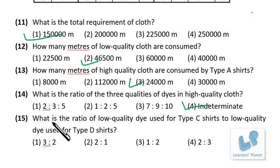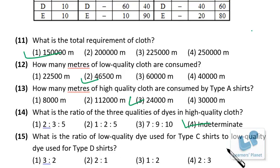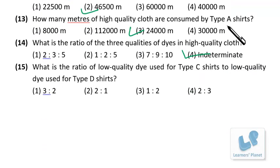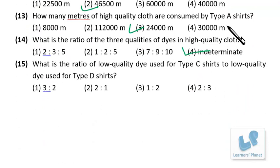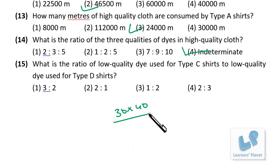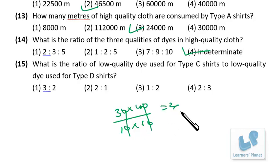For the ratio of low quality dye used in Type C shirts to low quality dye used in Type D shirts: Type C has 30,000 shirts with 40% low quality dye, and Type D has 10,000 shirts with 60% low quality dye. So the ratio is (30,000 × 40%) : (10,000 × 60%) = 12,000 : 6,000 = 2:1.